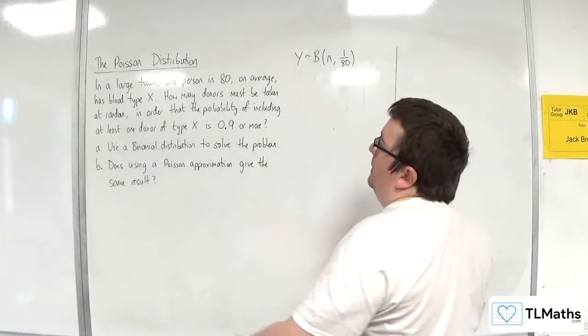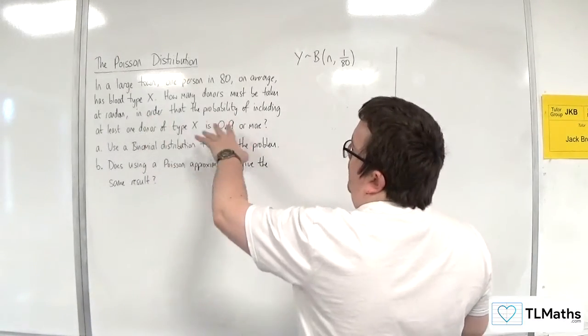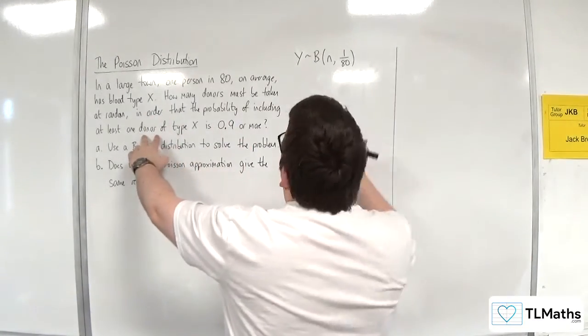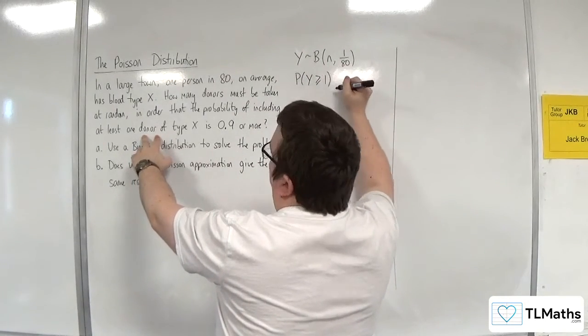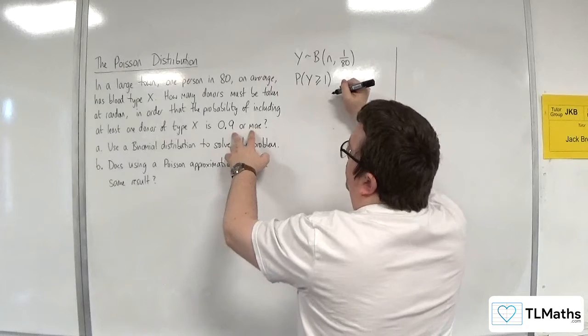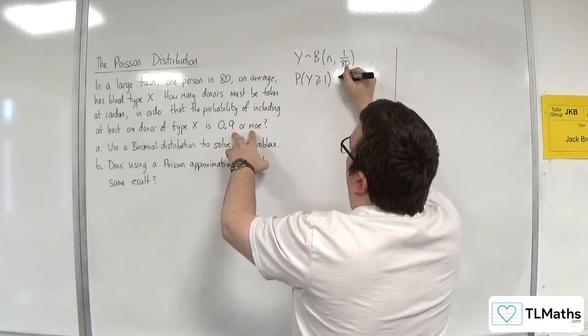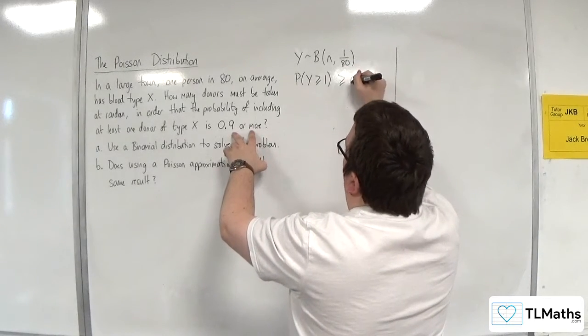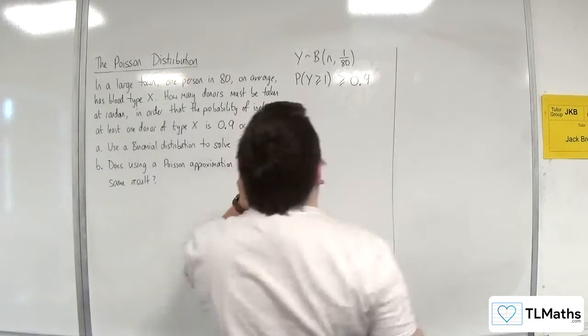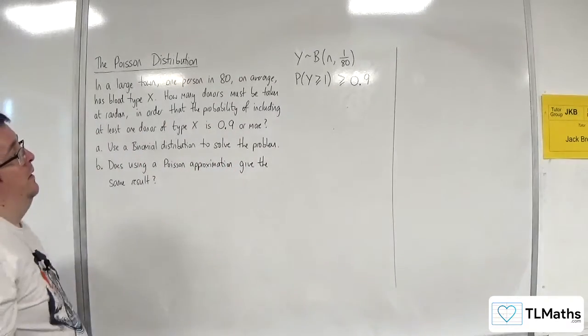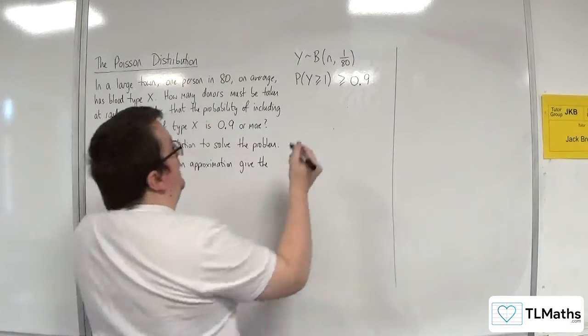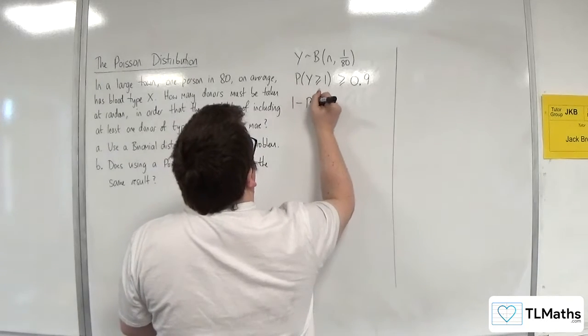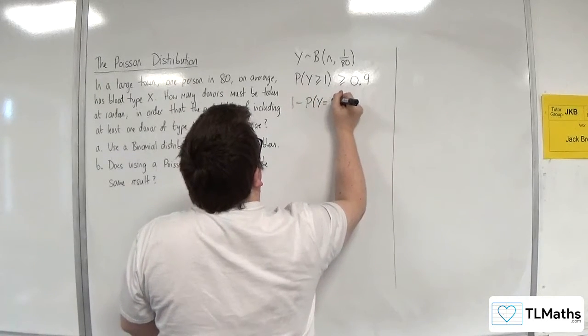Now here it says the probability of including at least one donor, so the probability of getting at least one, so greater than or equal to 1, has got to be 0.9 or more. So that's got to be greater than or equal to 0.9. So the probability of Y being greater than or equal to 1 is the same thing as 1 take away the probability of Y being equal to 0.